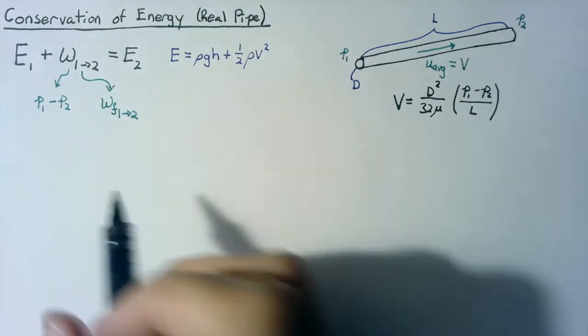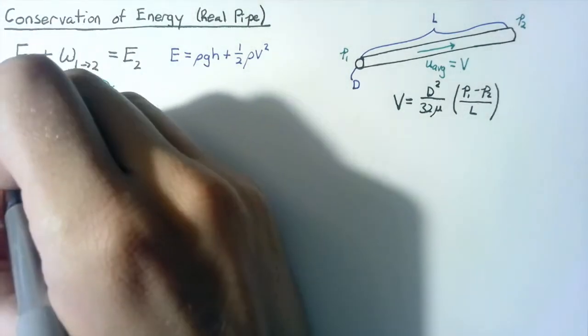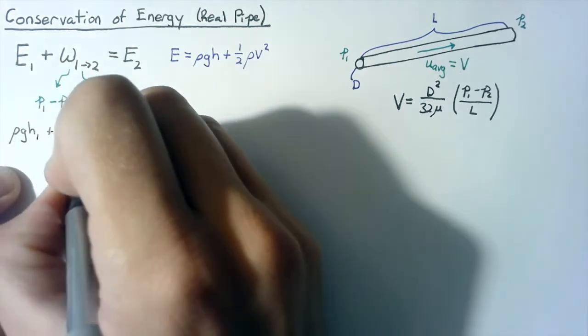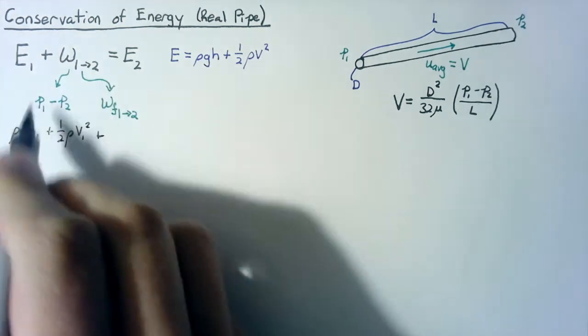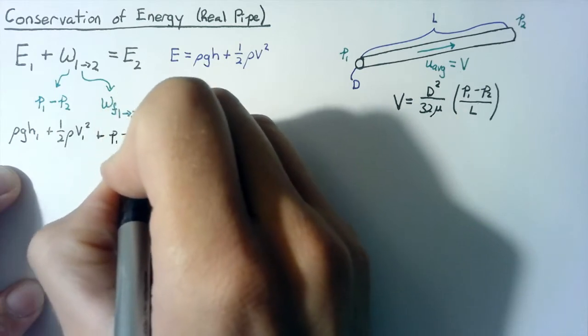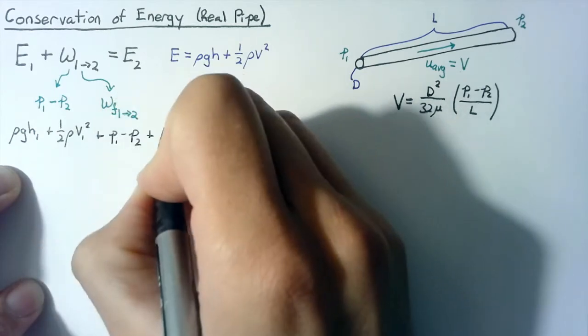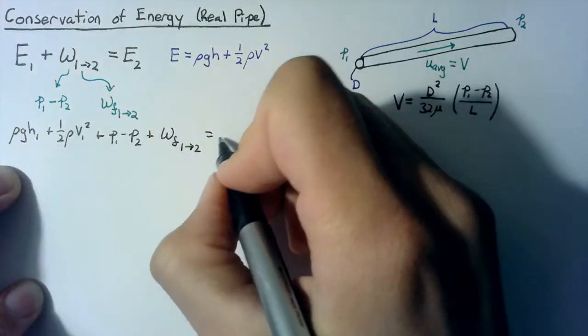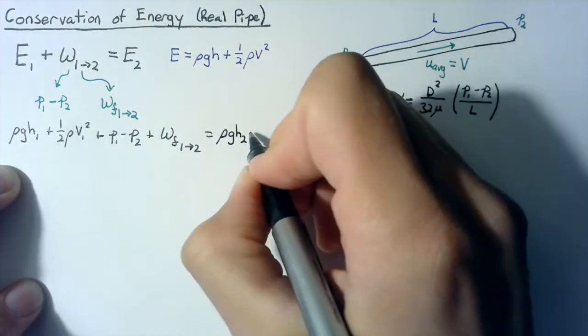Let's write the conservation of energy out completely. We're going to have rho GH1 plus one half rho V1 squared plus this pressure work P1 minus P2 plus this work done by friction from one to two, and that's going to be equal to the two energy components for state two.